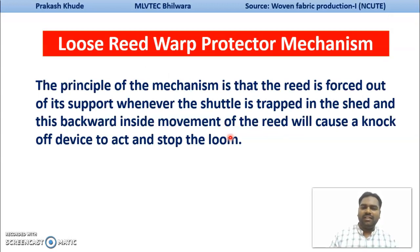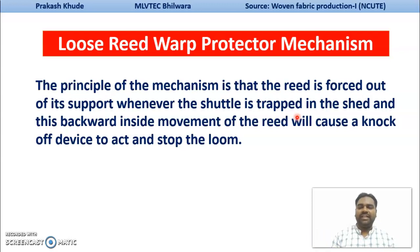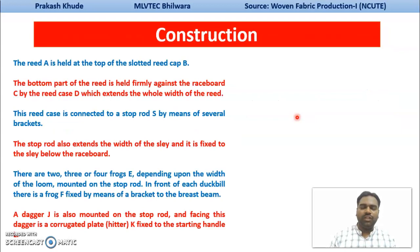The principle of this mechanism is that the reed is forced out of its support whenever the shuttle is trapped in the shed. When the shuttle has been trapped in between the shed, the reed is loosely mounted in between your reed cap and the reed case. During that period, when the shuttle has been trapped, the backward movement of this reed takes place. This will cause knocking off the lever and other mechanisms to knock off the starting handle of your loom and stop the loom.